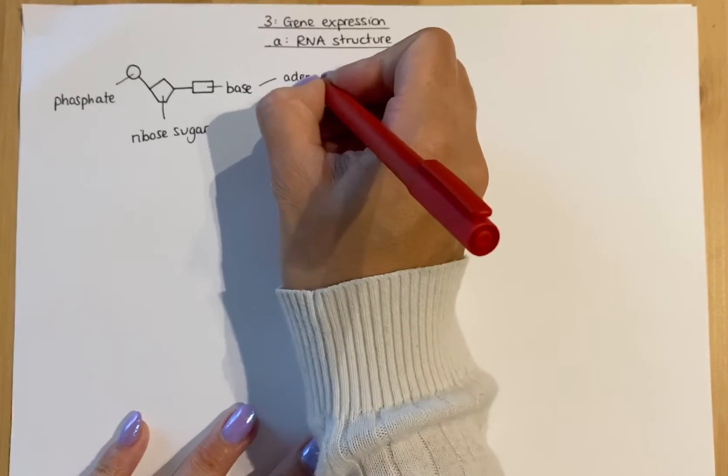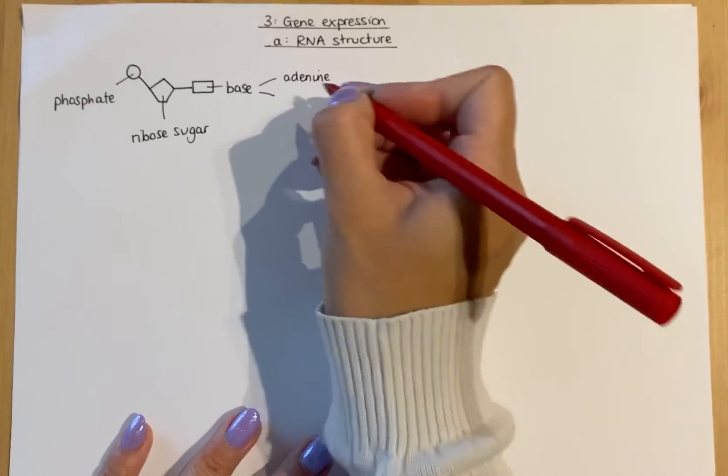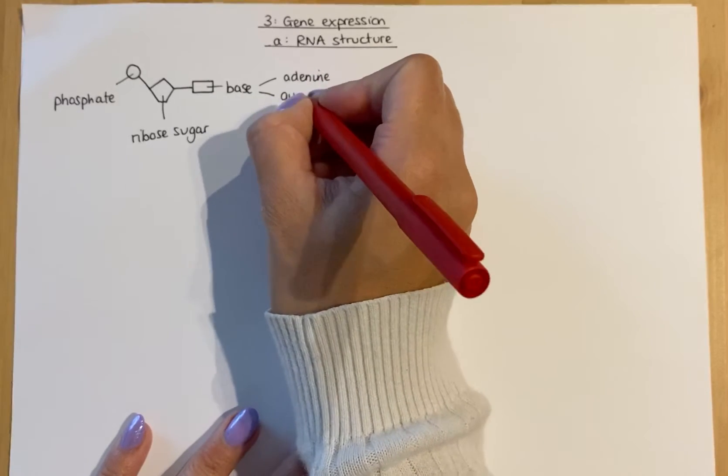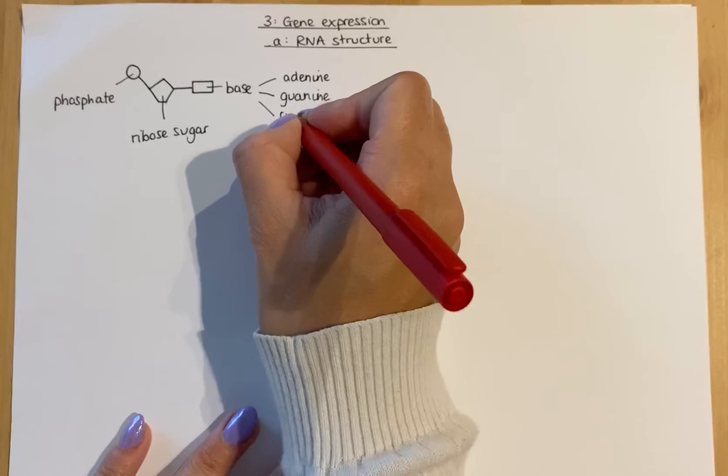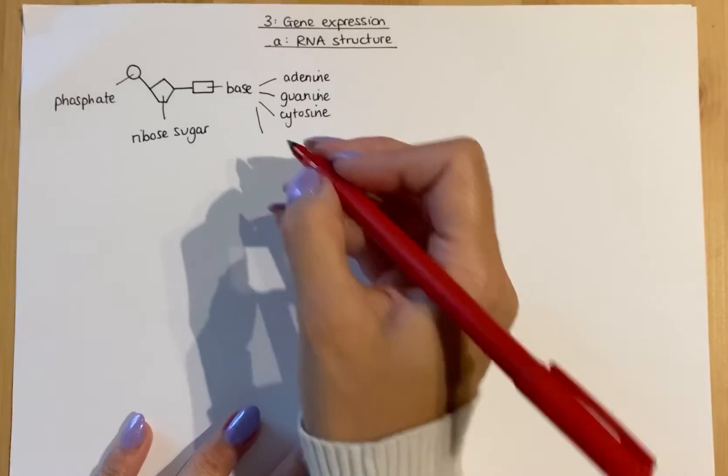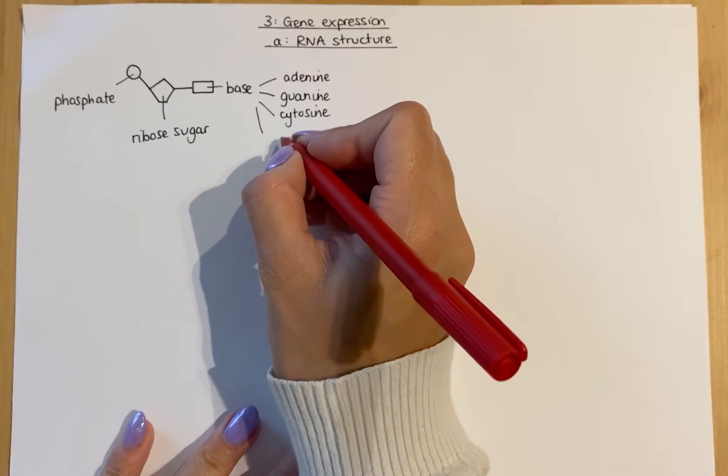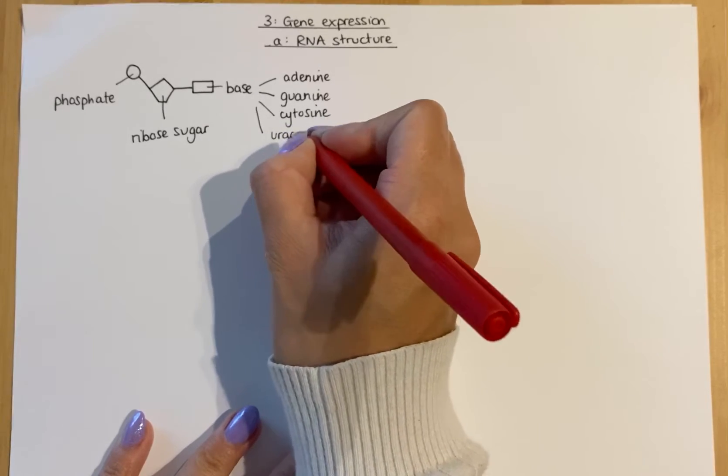As in DNA, you would have adenine, represented by the letter A, guanine using G, and cytosine. The last one, normally thymine in DNA, is replaced by uracil in RNA.